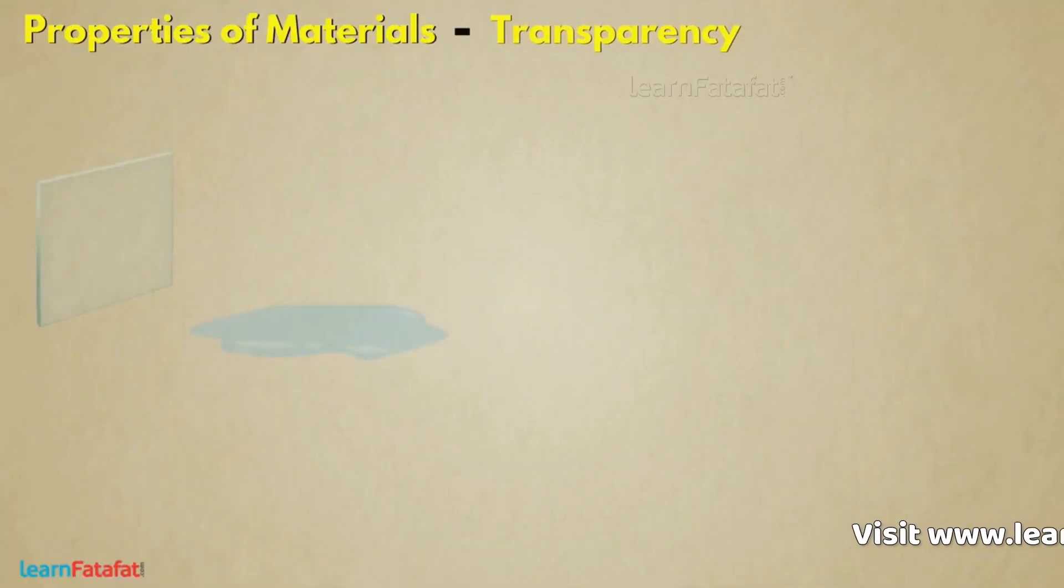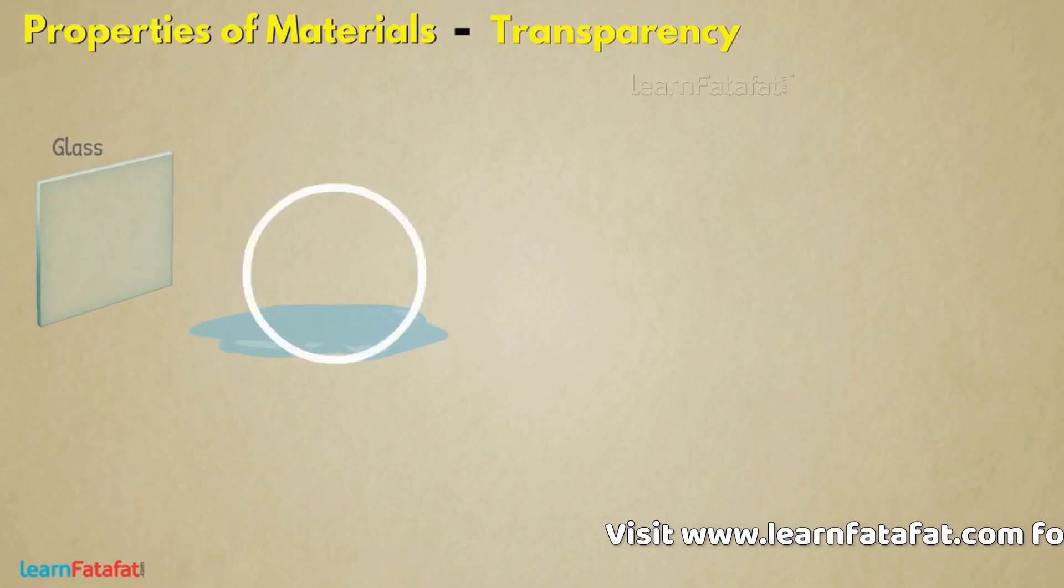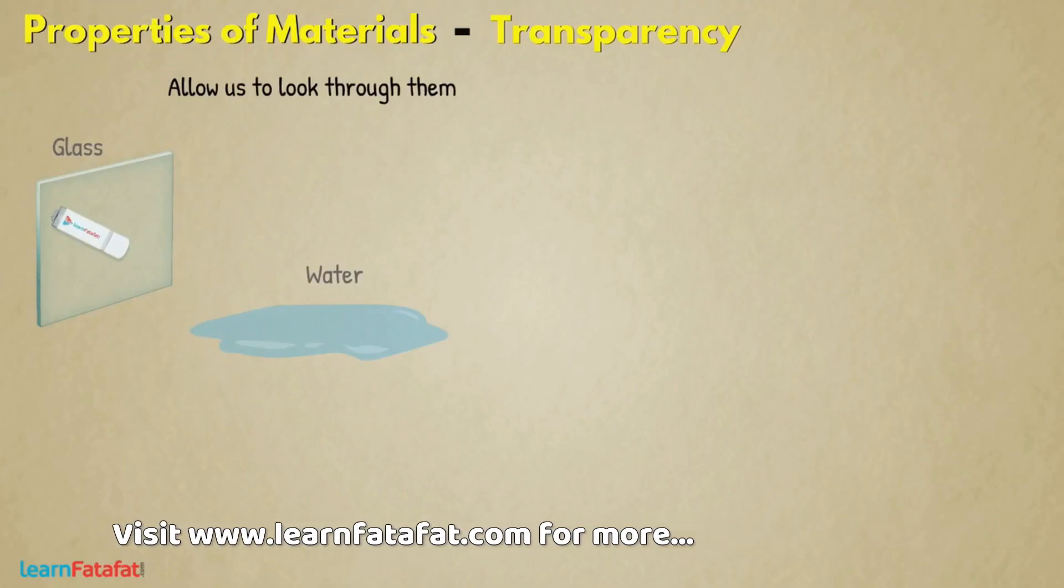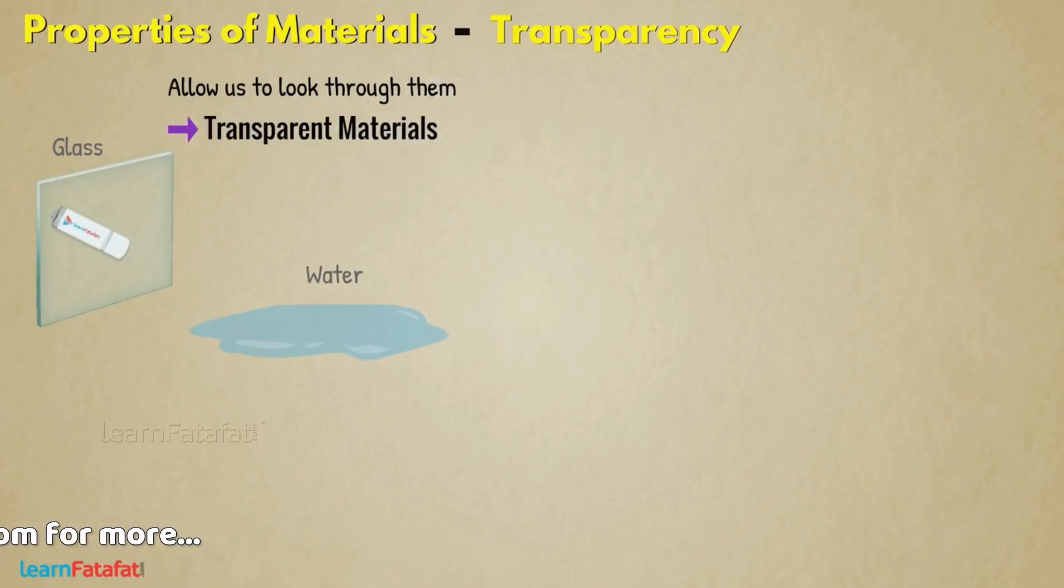There are materials such as glass, water, etc. that allow us to look through them completely. Such materials are called transparent materials.